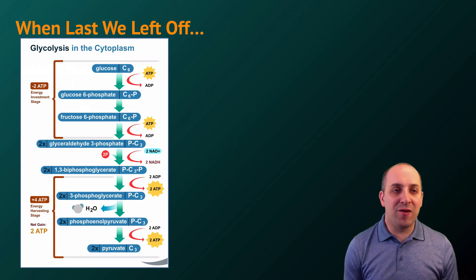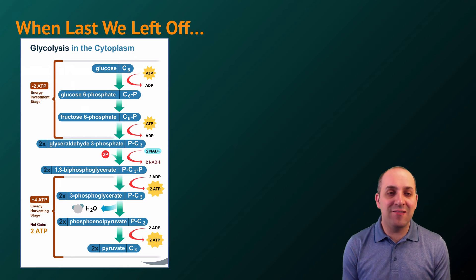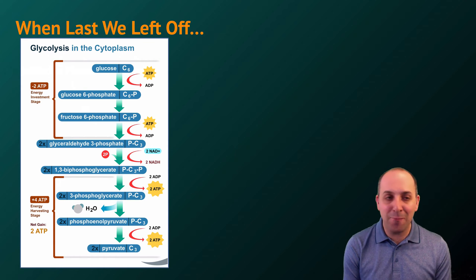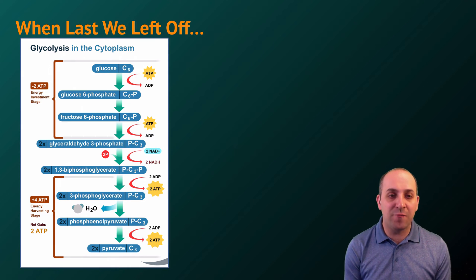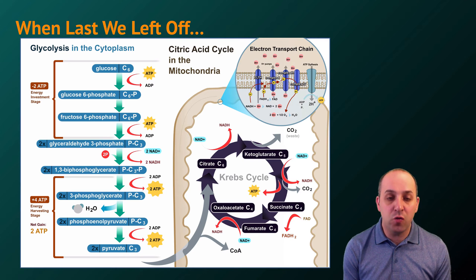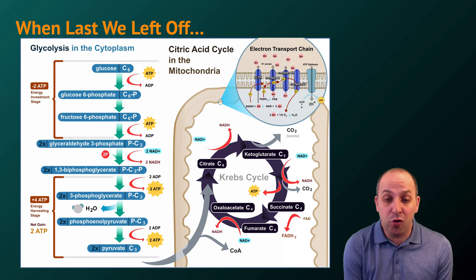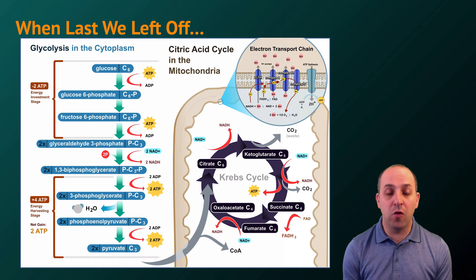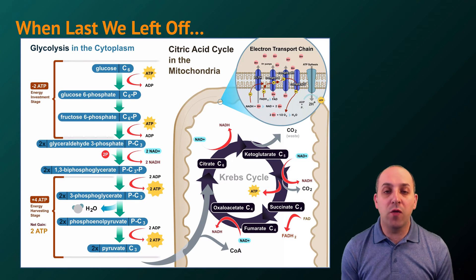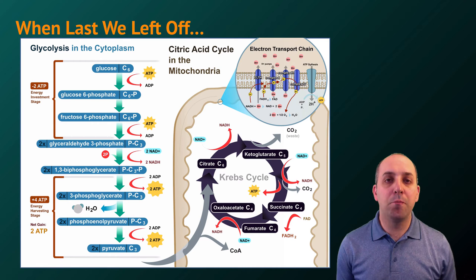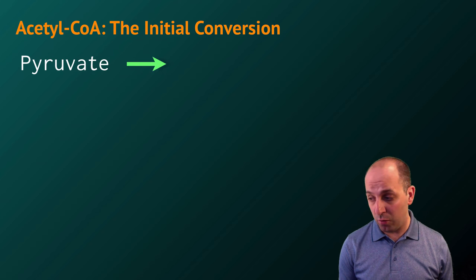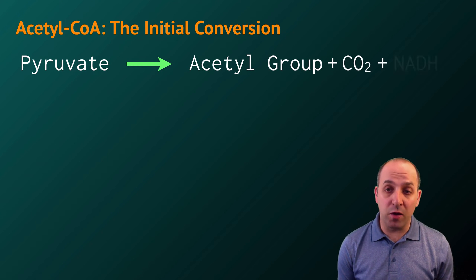Remember that even in anaerobic cellular respiration, glycolysis is the first step of the process, and glycolysis happens in the cytoplasm. Following glycolysis in aerobically respiring organisms, the pyruvate produced at the end is transported into the mitochondria — into the mitochondrial matrix — to go through the citric acid cycle, also termed the Krebs cycle, before going through oxidative phosphorylation at the electron transport chain. But before pyruvate enters the mitochondria, it's converted into an acetyl group, a two-carbon molecule.